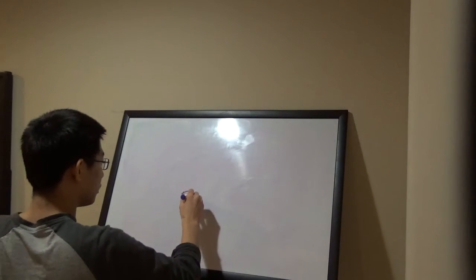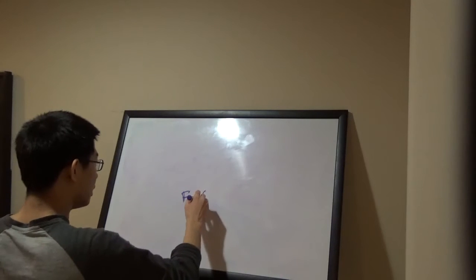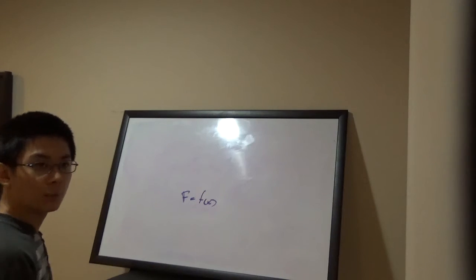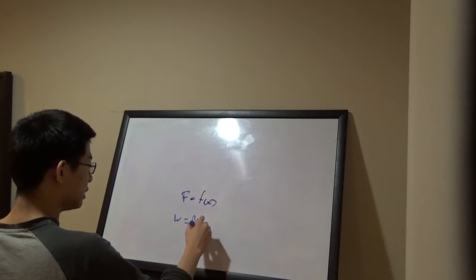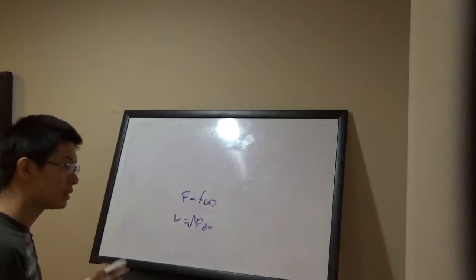First things first, let's say that our spring did not follow Hooke's law and F is equal to some function of X. We can just integrate both sides with respect to X to find work. Work is equal to the integral of F dx. So we just integrate this with respect to X.